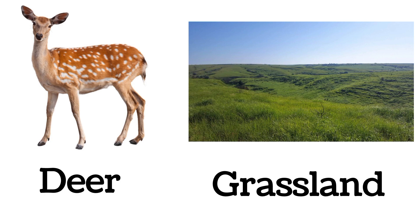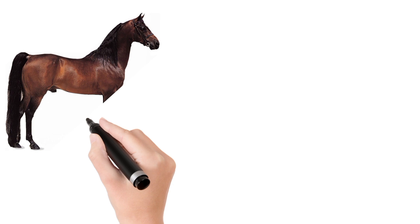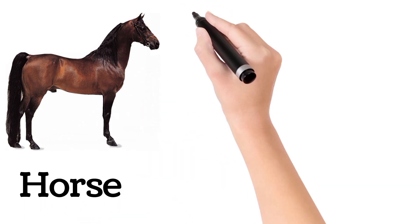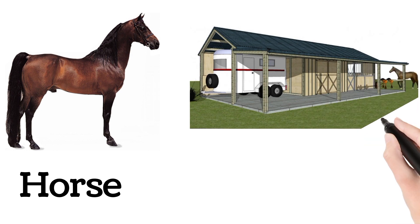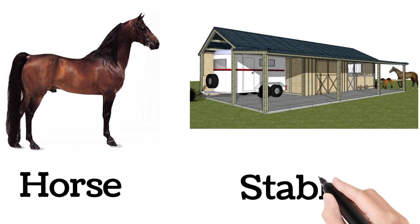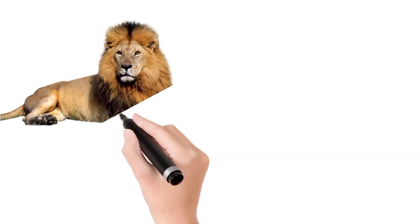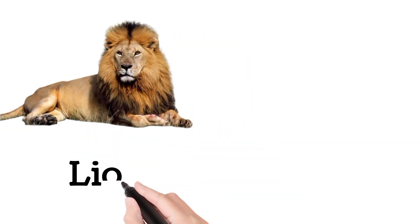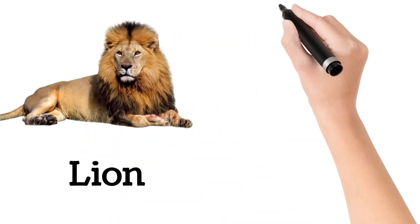Deer lives in a grassland. Horse. Horse lives in a stable.